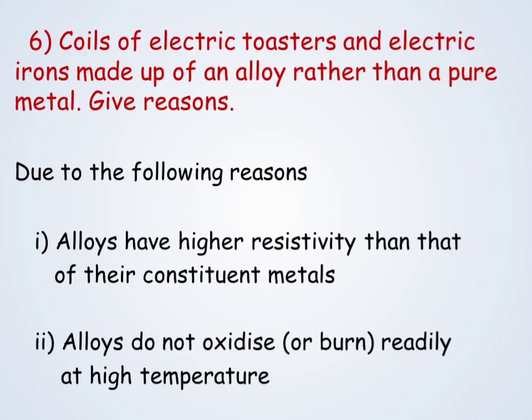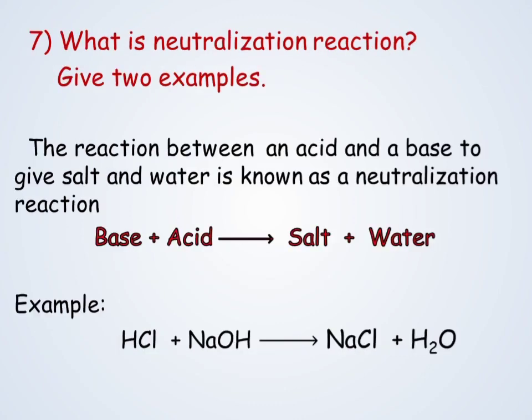Coils of electric toasters and electric iron boxes are made up of alloys rather than pure metals for the following reasons: alloys have higher resistivity than that of their constituent metals. Also, alloys do not oxidize — that means they do not burn readily at higher temperatures. Because of these reasons, alloys are used in electric toasters and electric iron boxes.